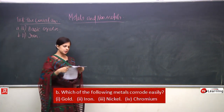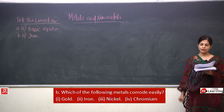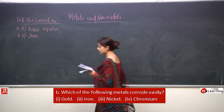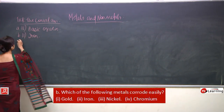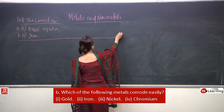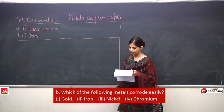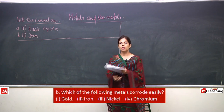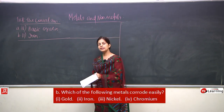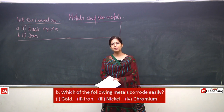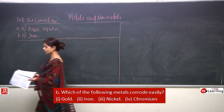Which is the most reactive metal? It is sodium, which is stored in kerosene. The most reactive non-metal is phosphorus, stored in water. Sodium cannot be kept in water because it is very reactive and will react violently with water.